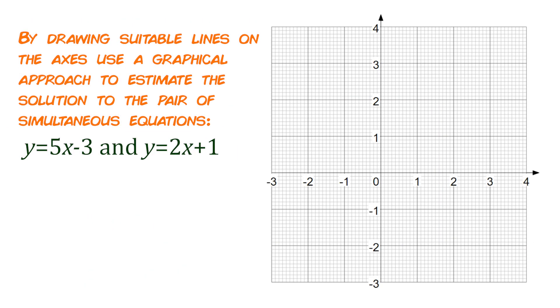By drawing suitable lines on the axes above use a graphical approach to estimate the solution to the pair of simultaneous equations. So the equations that we've been given are y equals 5x minus 3 and y equals 2x add 1. So we're going to draw both of those lines and then we're going to look for the point where they intersect, where they cross over with each other.